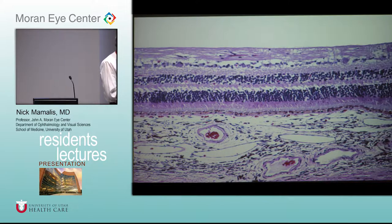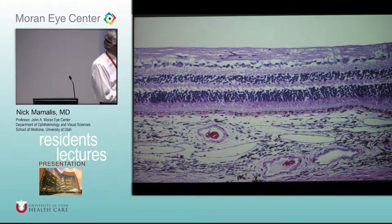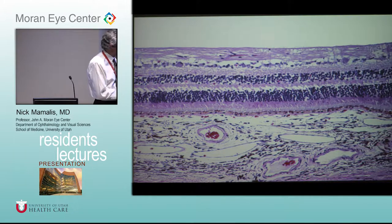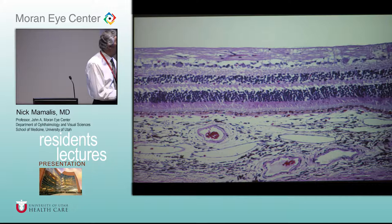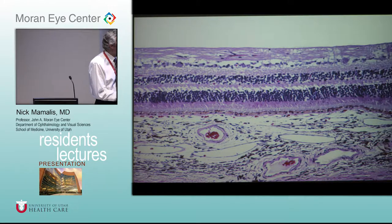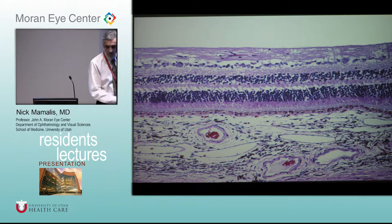RPE — retinal pigment epithelium. All right. Then choriocapillaris, and then you go to the medium vessels and the larger vessels of the choroid, and then eventually the sclera.